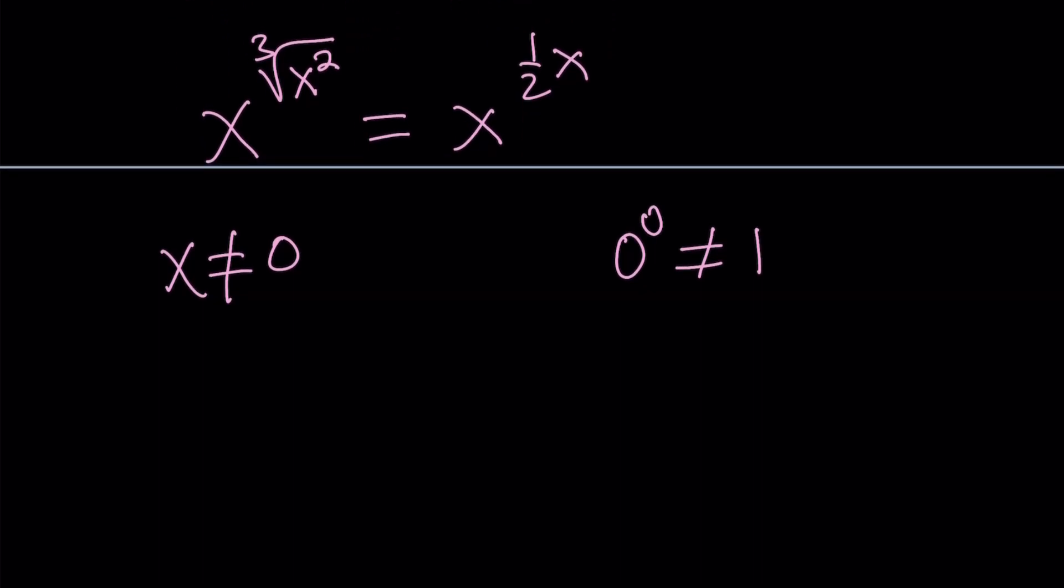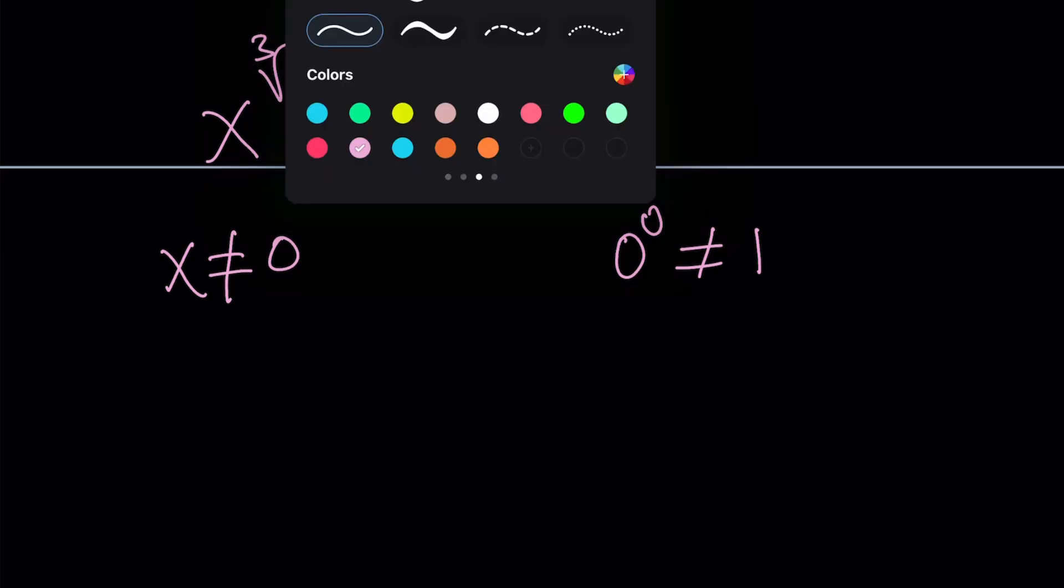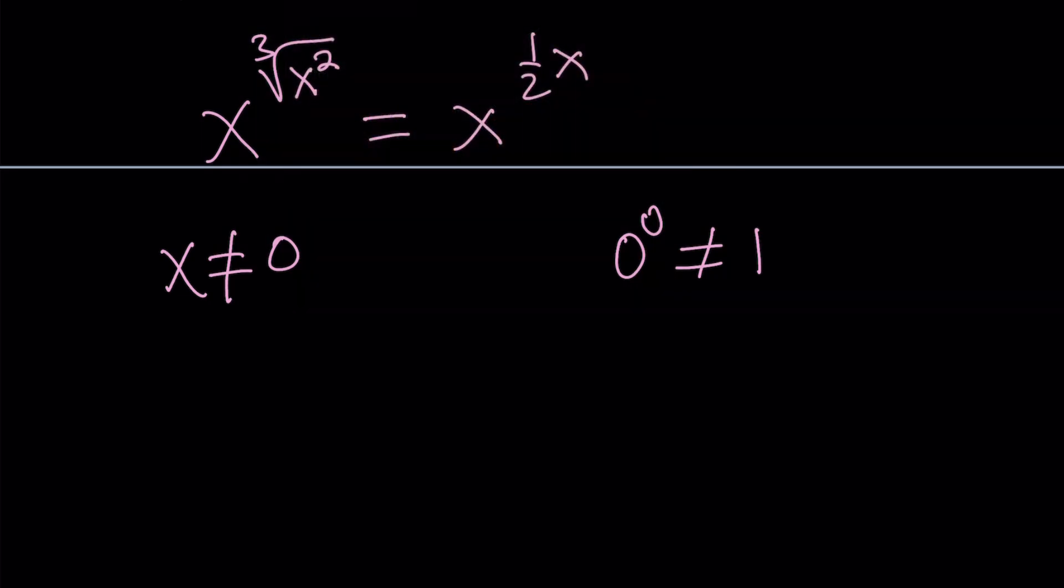0 to the power 0 does not equal 1, as some people say. Don't believe them if they say that, because it's not 1. Anyways, that's another story. So let's go ahead and see how we can handle this problem. Let's go ahead and divide both sides by x to the power 1 half of x.